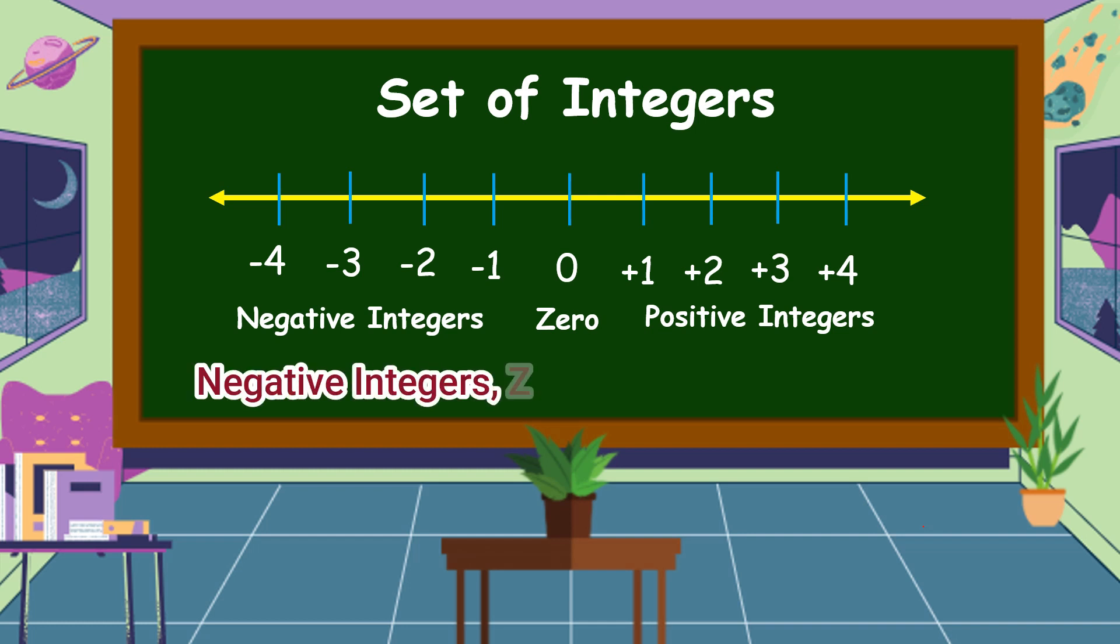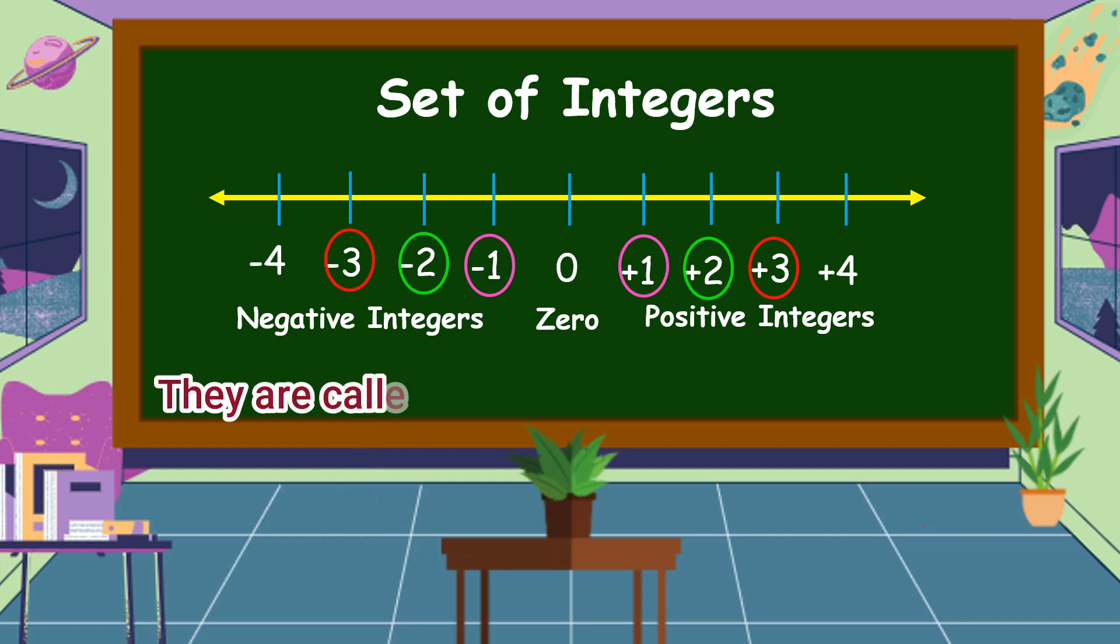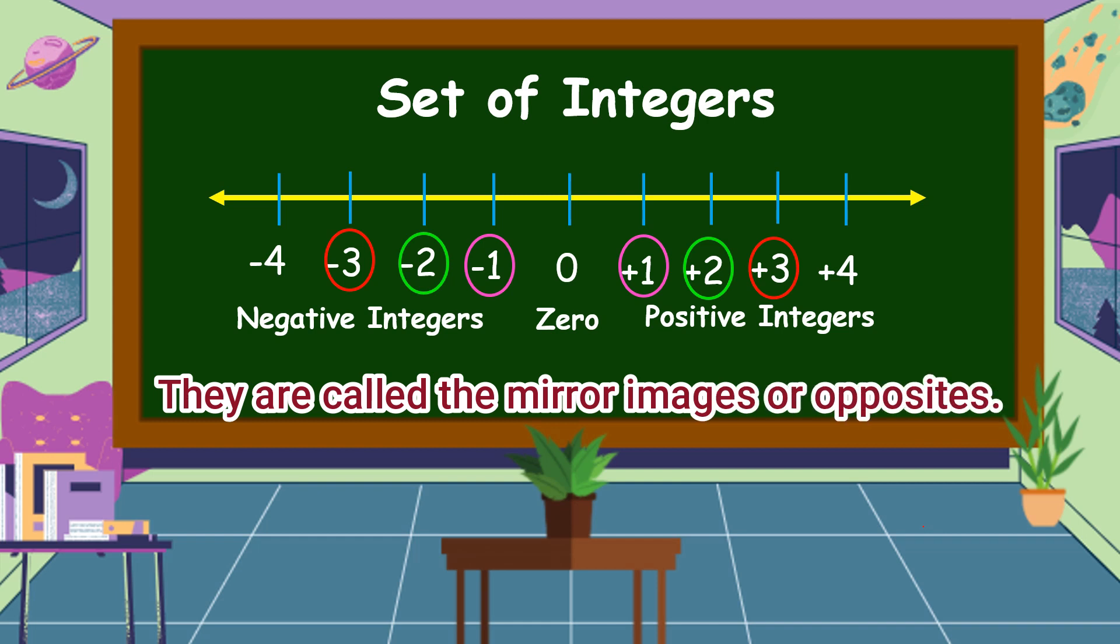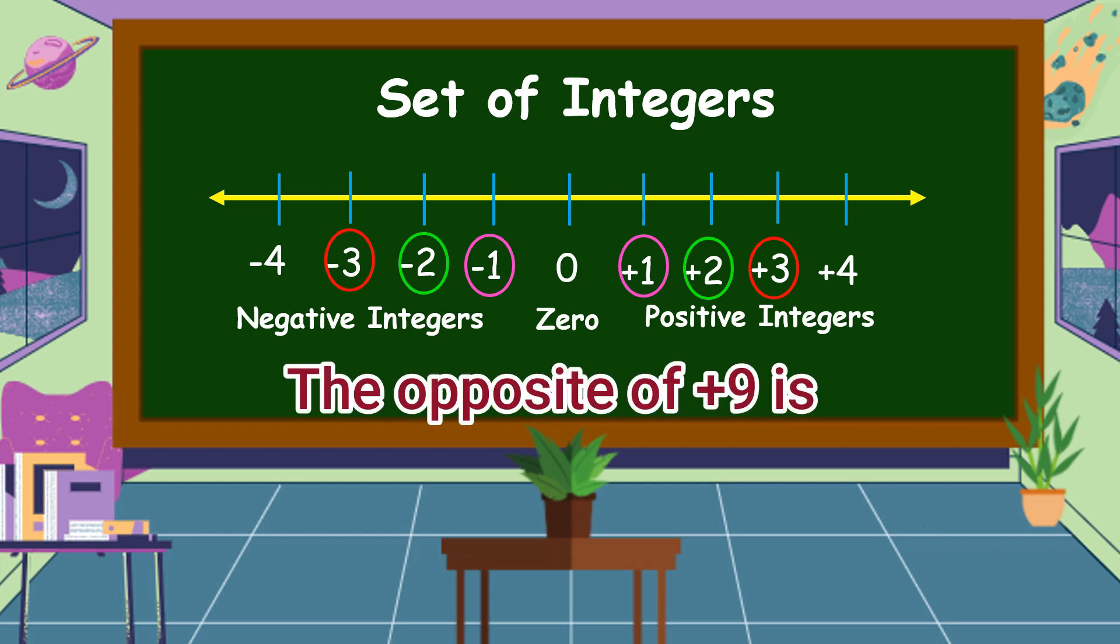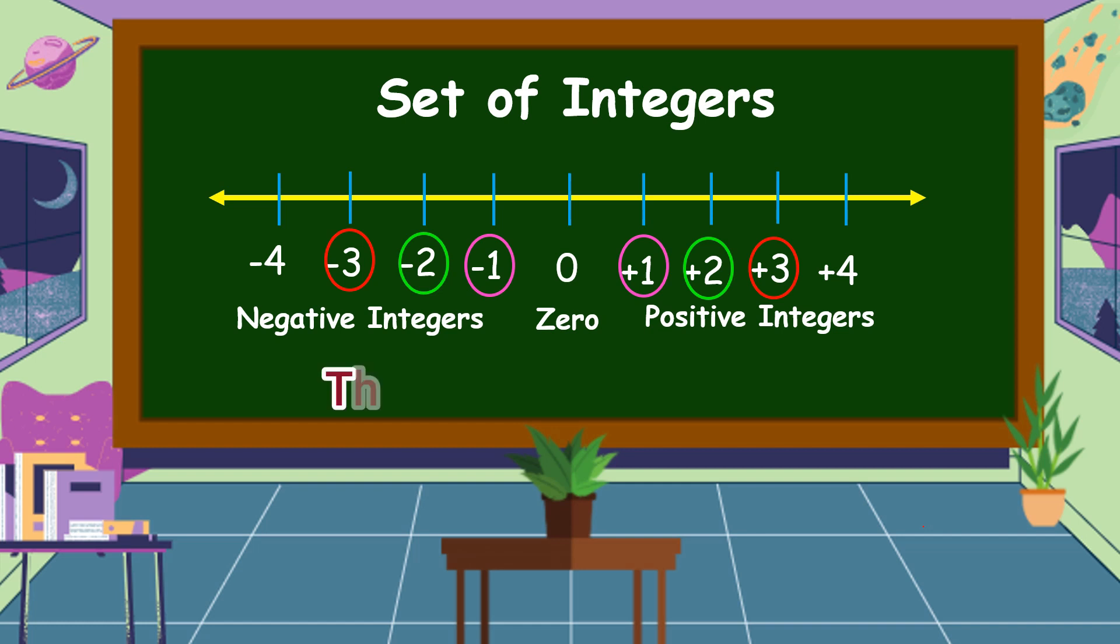We have negative integers, zero, and positive integers. Imagine folding the line at point 0. You will notice that 1 will fall at negative 1, 2 at negative 2, and 3 at negative 3. They are called the mirror images or the opposites. Any integer has its opposite. The opposite of positive 9 is negative 9. The opposite of positive 10 is negative 10. Two integers are opposites if they are of the same distance from 0.